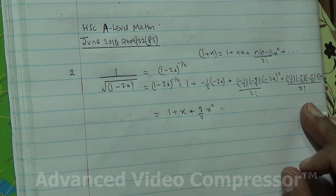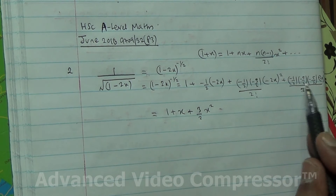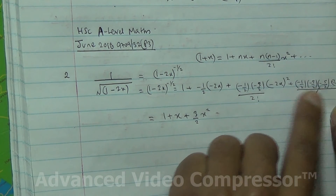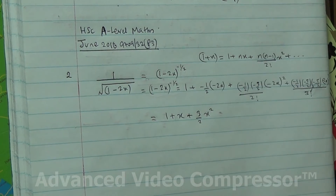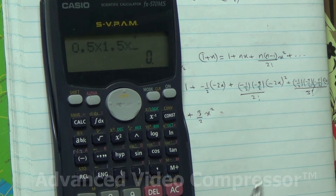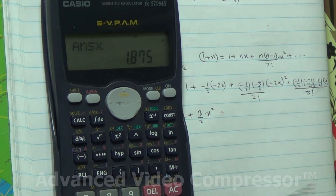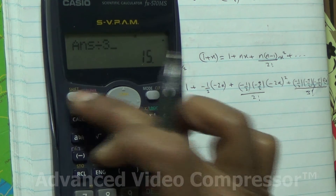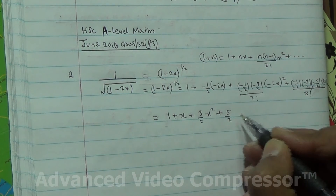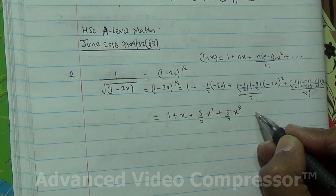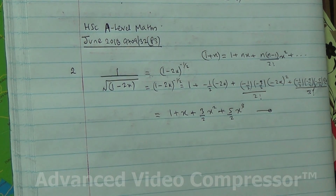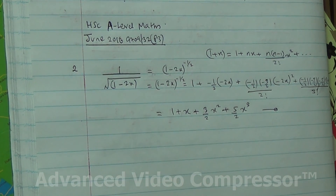Now looking at the x cubed term: minus times minus times minus becomes minus, and minus 2 cubed is negative, so all of that comes out as plus. So we get 0.5 times 1.5 times 2.5 times 2 cubed, divided by factorial 3, giving plus 5 over 2 x cubed. We've been asked to expand up to and including the x cubed term, and here we are — this is question number 2 taken from June 2016 A-level Maths HSC P3.